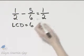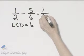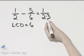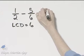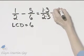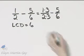What do I multiply 2 by in order to get 6? I multiply 2 by 3. And if I multiply the denominator of a fraction by 3, I must multiply the numerator by 3. Now let's subtract 5/6. We already have a denominator there of 6.